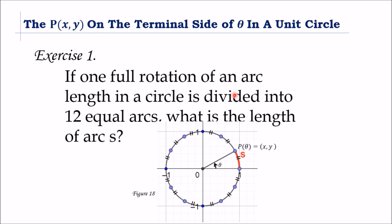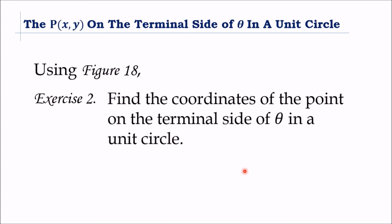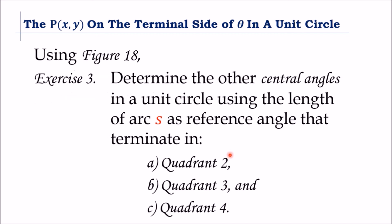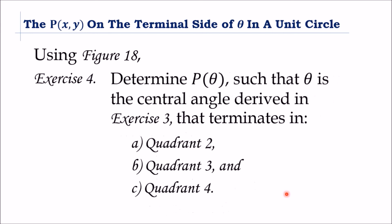From the previous illustrations, I know you can answer the following exercises. If one full rotation of an arc length in a circle is divided into 12 equal arcs, what is the length of arc S? Using Figure 18, find the coordinates of the points on the terminal side of theta in a unit circle. Determine the other central angles using the arc length S as reference angle that terminate in quadrant 2, quadrant 3, and quadrant 4. Also determine P of theta for those central angles.